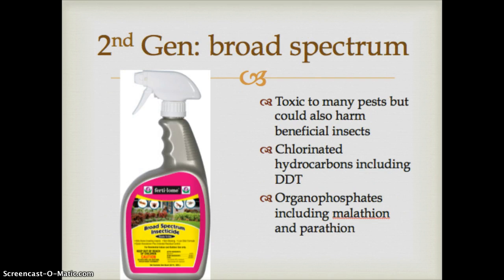A contrast to that are broad-spectrum pesticides, which are harmful to many, many pests but could also harm beneficial organisms as well. These fall into two main categories. One is called chlorinated hydrocarbons — a key example being the chemical compound DDT. Another group is called organophosphates, which have carbon-hydrogen bonds with a phosphate molecule or ion attached. These include brand names like malathion and parathion. Another well-known example is the herbicide Roundup, which essentially kills all plants — it is not selective whatsoever, making it very broad-spectrum.